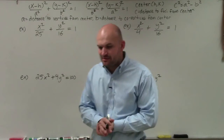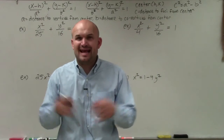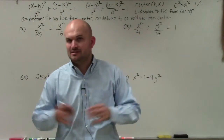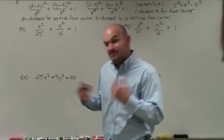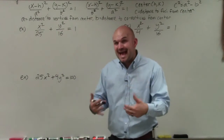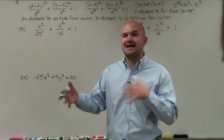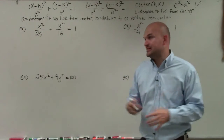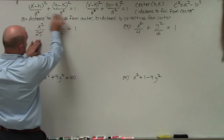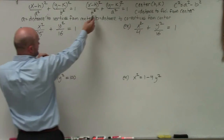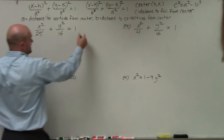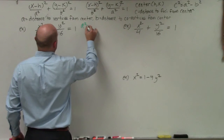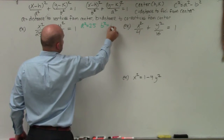When doing these problems, remember that A represents the endpoints of the major axis, and the major axis is always larger than the minor axis — whether vertical or horizontal. That means A is always larger than B, so A² is always larger than B². The first thing I want to do is identify A² and B², which are the denominators. Since 25 is larger than 16, A² equals 25 and B² equals 16.